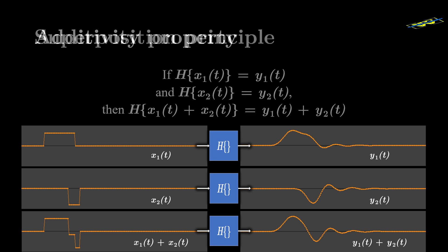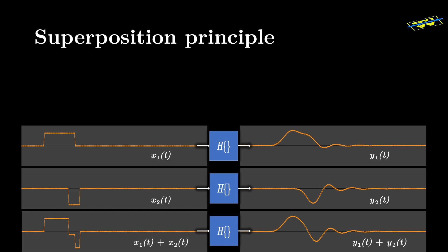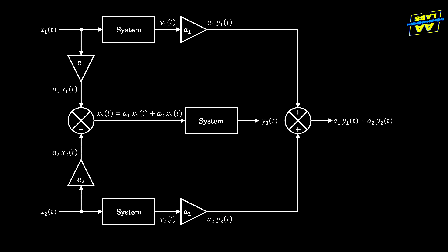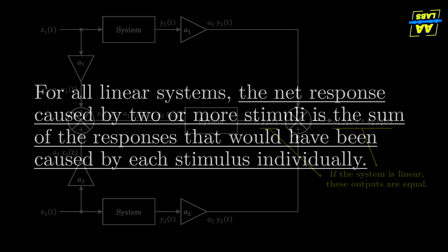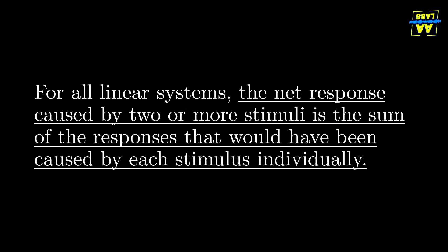These two properties together are known as the superposition principle. Not to delve too deeply into the math, but linear systems, or systems that follow this superposition principle, are much easier to mathematically model and predict than those that don't. The idea is that for all linear systems, the net response caused by two or more stimuli is the sum of the responses that would have been caused by each stimulus individually.